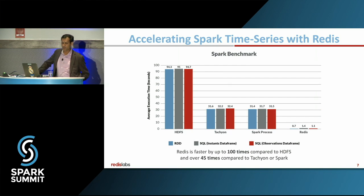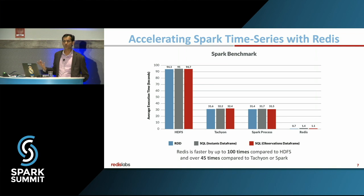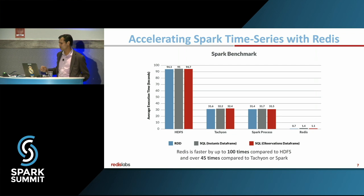Here is a benchmark done about six months ago — a time series example with about a thousand stocks over 32 years. The data set was run in three models: data sitting on HDFS, Tachyon serving as an off-heap cache, Spark running as an on-heap cache in its own process, and finally Redis as an off-heap cache. You can see that running data off-heap on Redis shows dramatic improvement over the other configurations. That's an example of how the two technologies working together give you a dramatic performance boost, and the ratio of improvements is listed at the bottom of the chart.